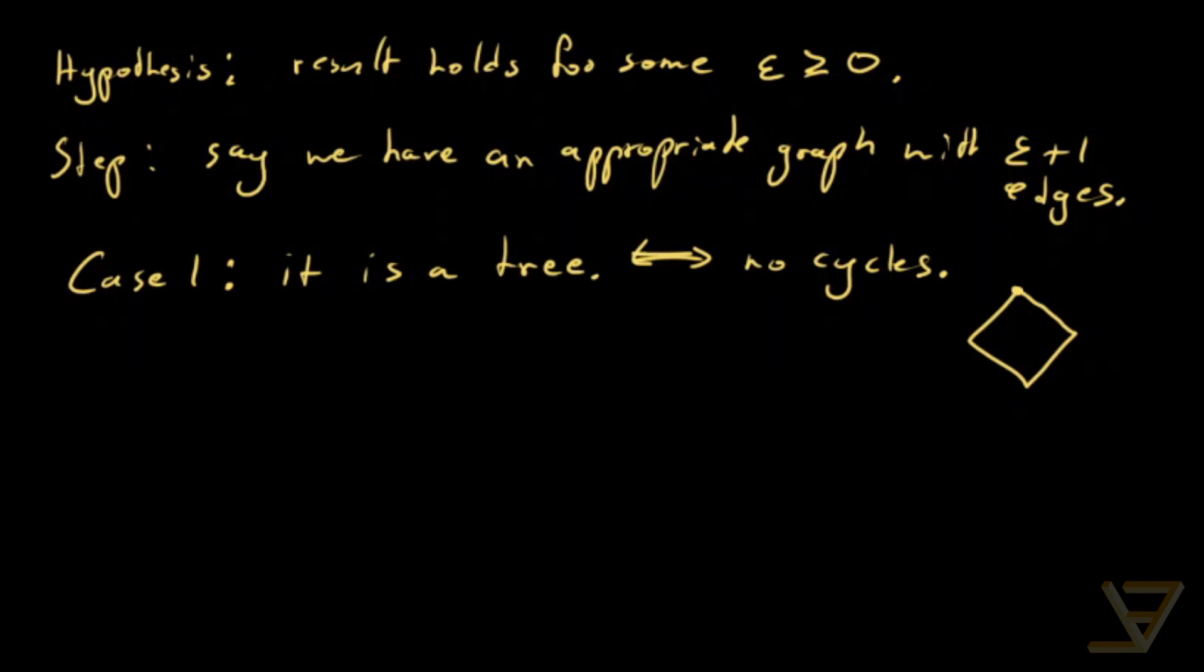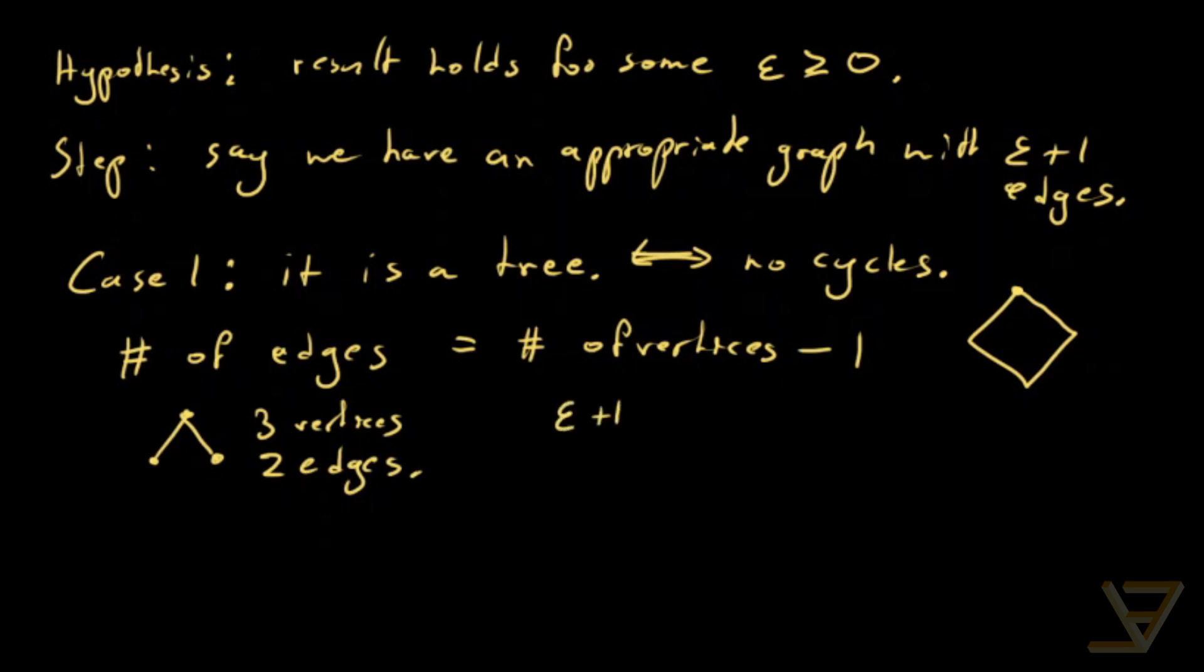Now something interesting about trees is that the number of edges is equal to the number of vertices minus 1. So just consider one of the simplest possible graphs, this one. We have three vertices and two edges.